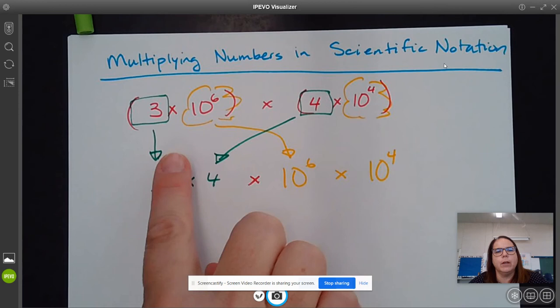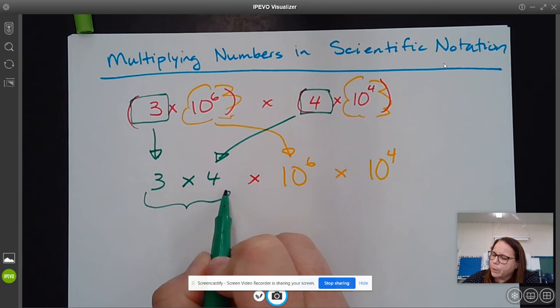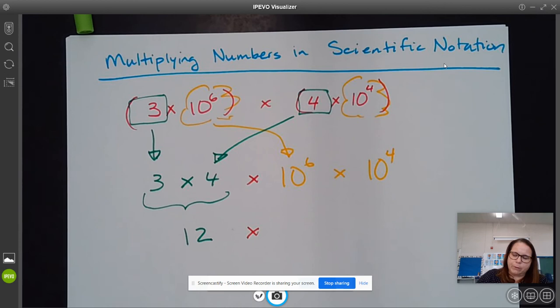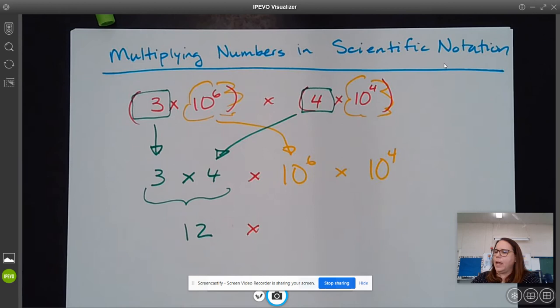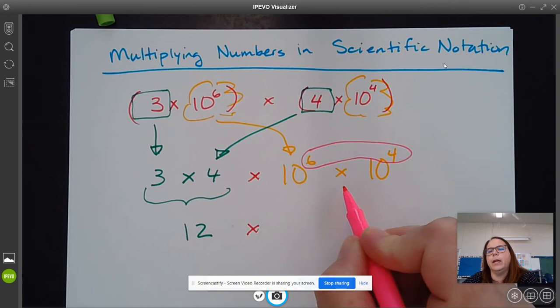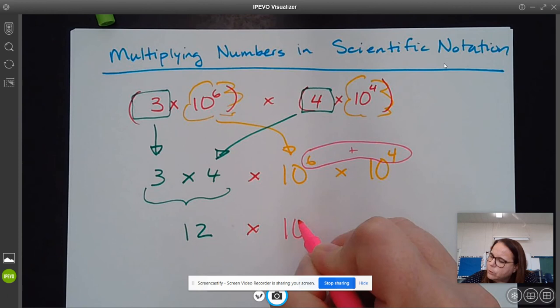And then we can see that 3 times 4 is just 12 times, and remember, if we're going to multiply and we have the same base, the rule is we can just add these exponents. So this is just like six 10s multiplied in a row times four more 10s, and so we can just add these exponents, so this is going to be 10 to the 10th power.